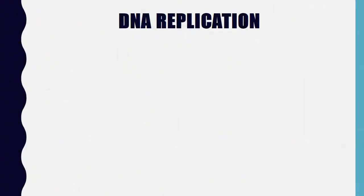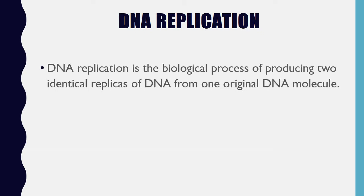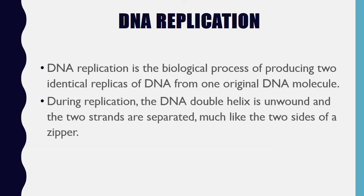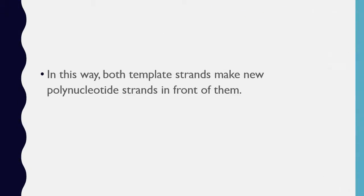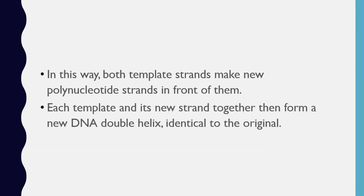DNA replication is the biological process of producing two identical replicas of DNA from one original DNA molecule. During replication, the DNA double helix is unwound and the two strands are separated, much like the two sides of a zipper. Each strand acts as a template to produce another strand. Its nitrogenous bases make pairs with the N bases of new nucleotides. Both template strands make new polynucleotide strands. Each template and its new strand together then form a new DNA double helix, identical to the original.